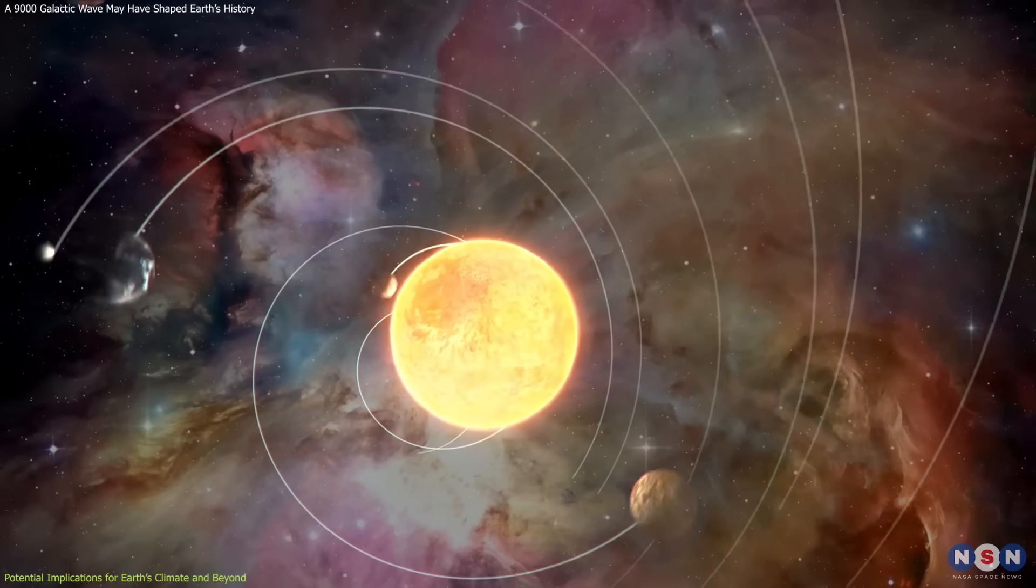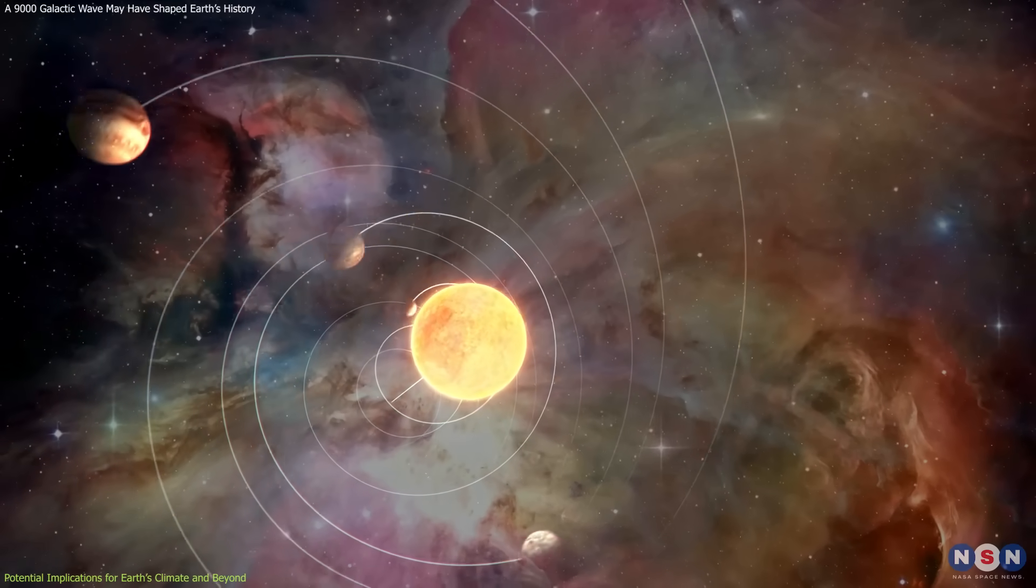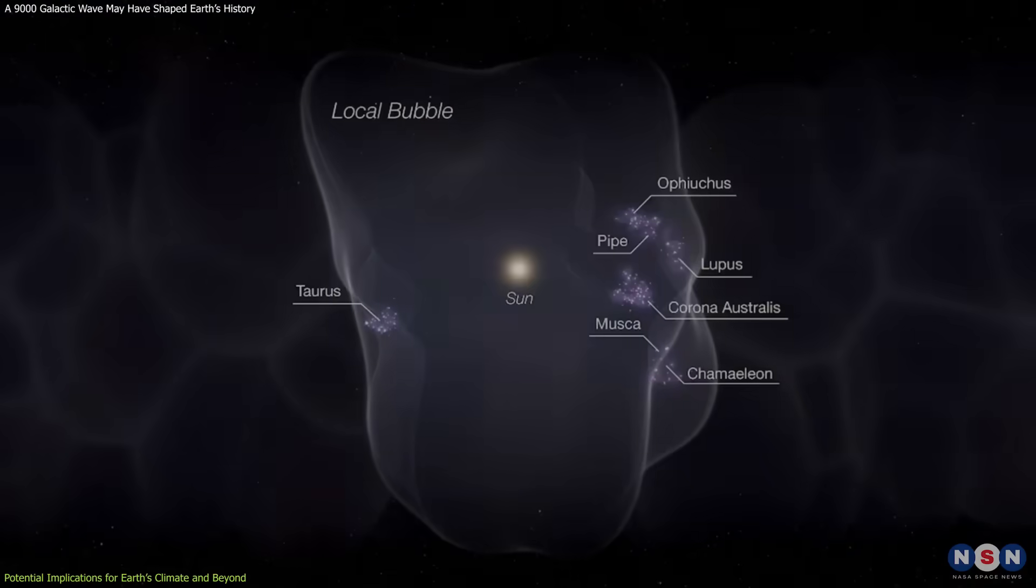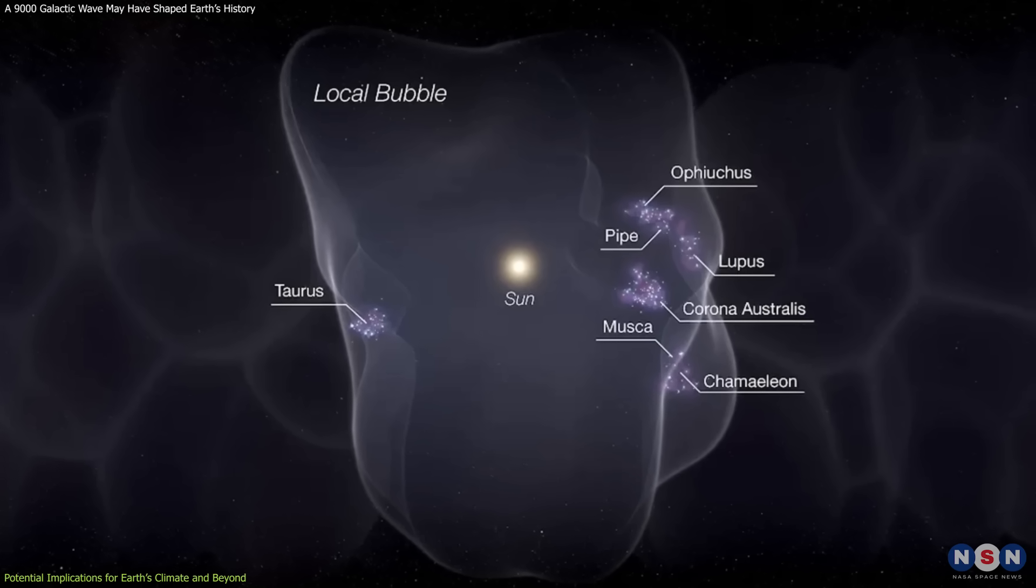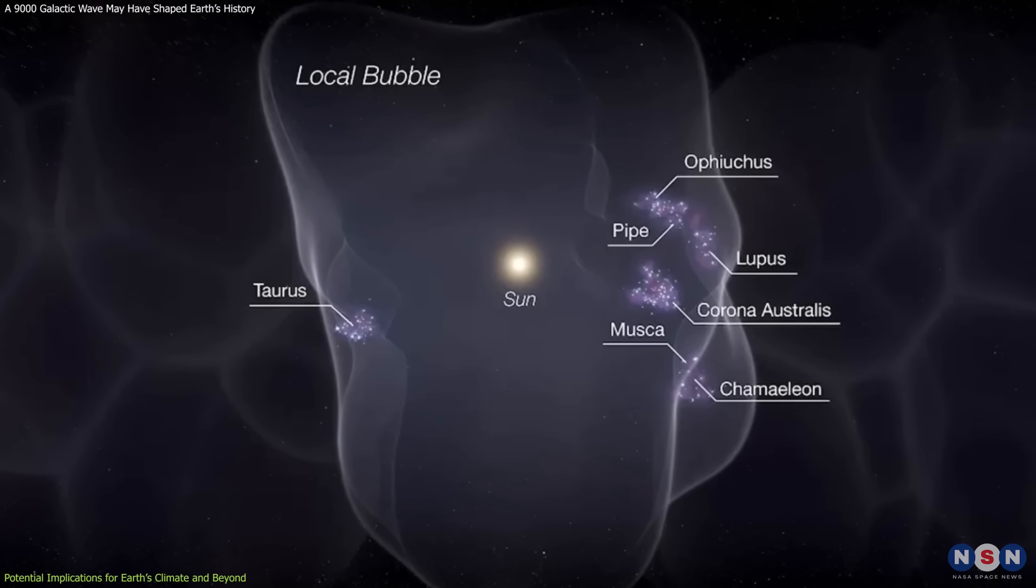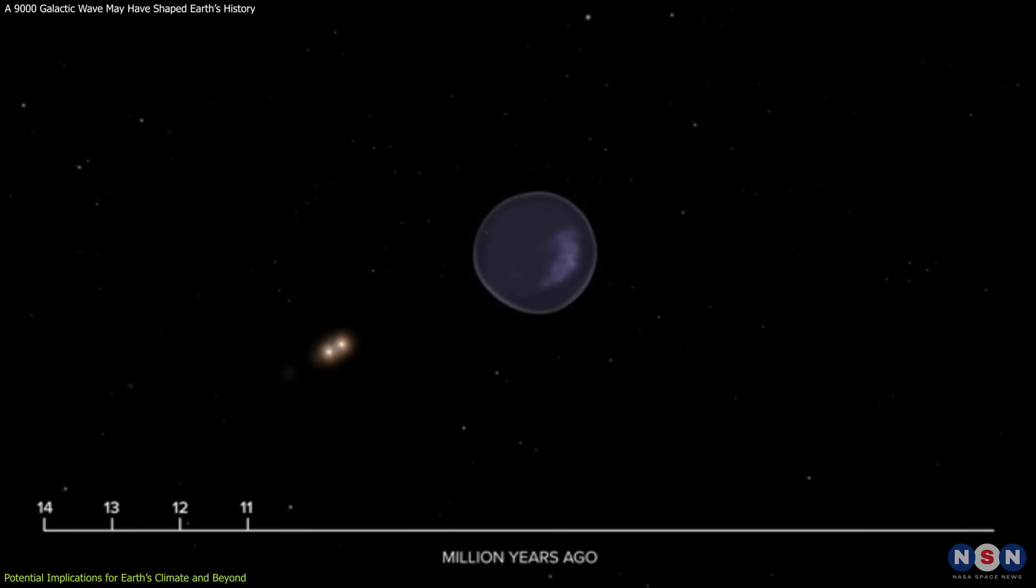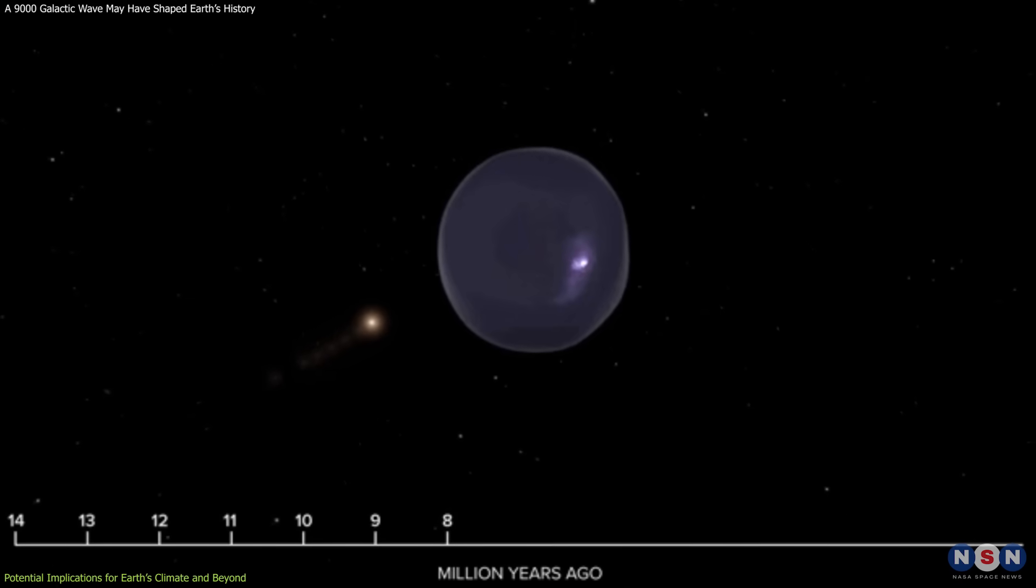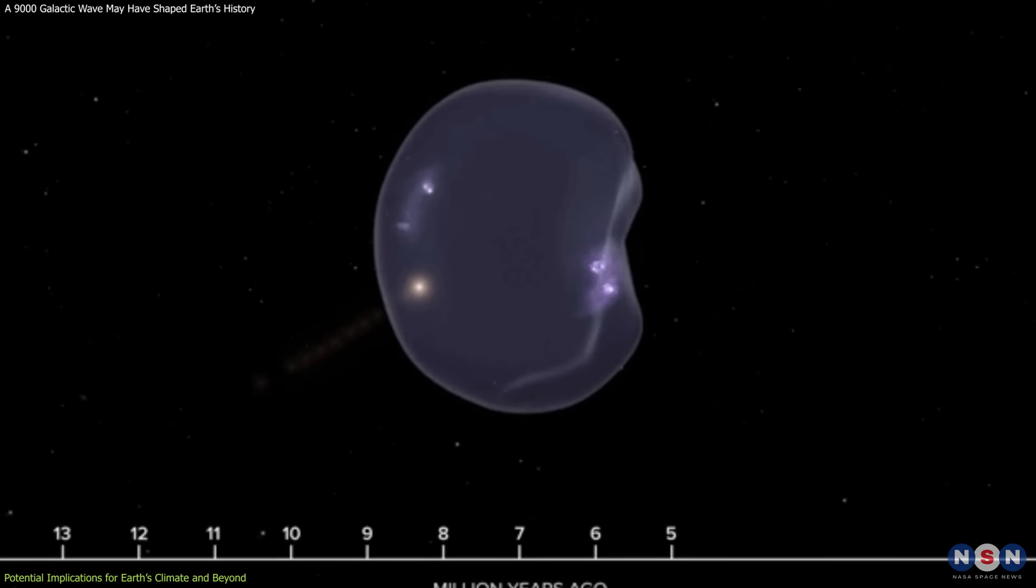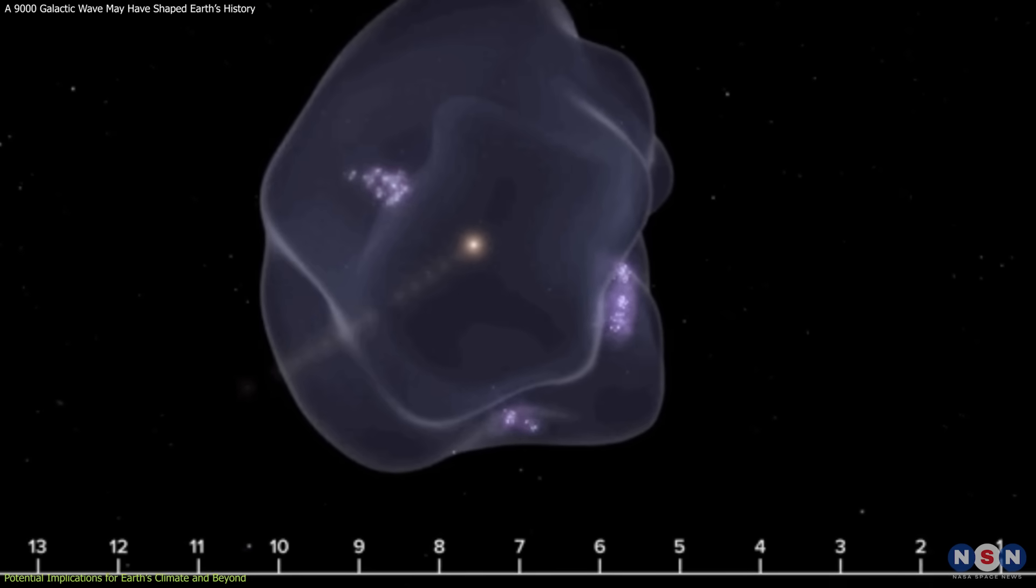A similar discovery that provides insight into the effects of interstellar interactions is the local bubble, a vast, low-density cavity in the interstellar medium surrounding our solar system. The local bubble is believed to have formed due to multiple supernova explosions over the past 10 to 20 million years.